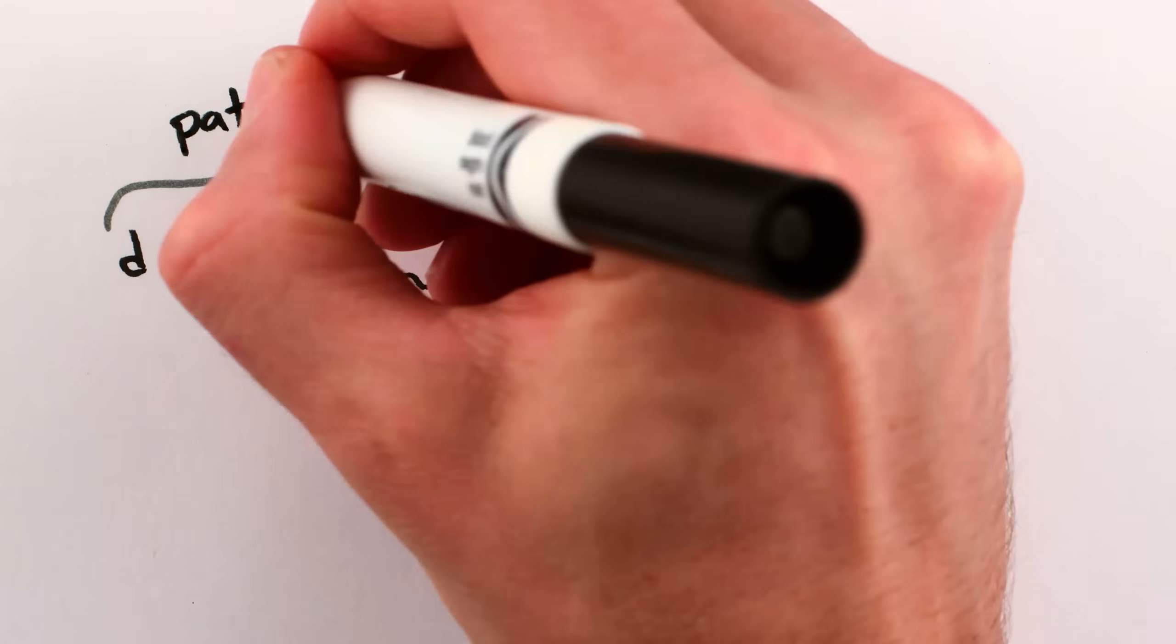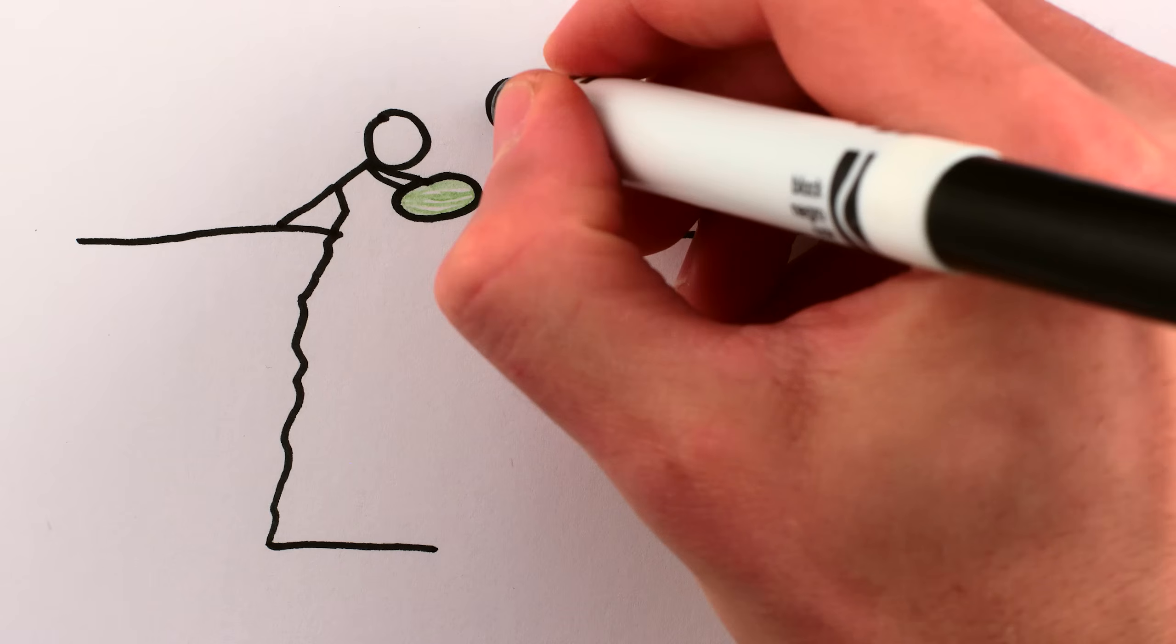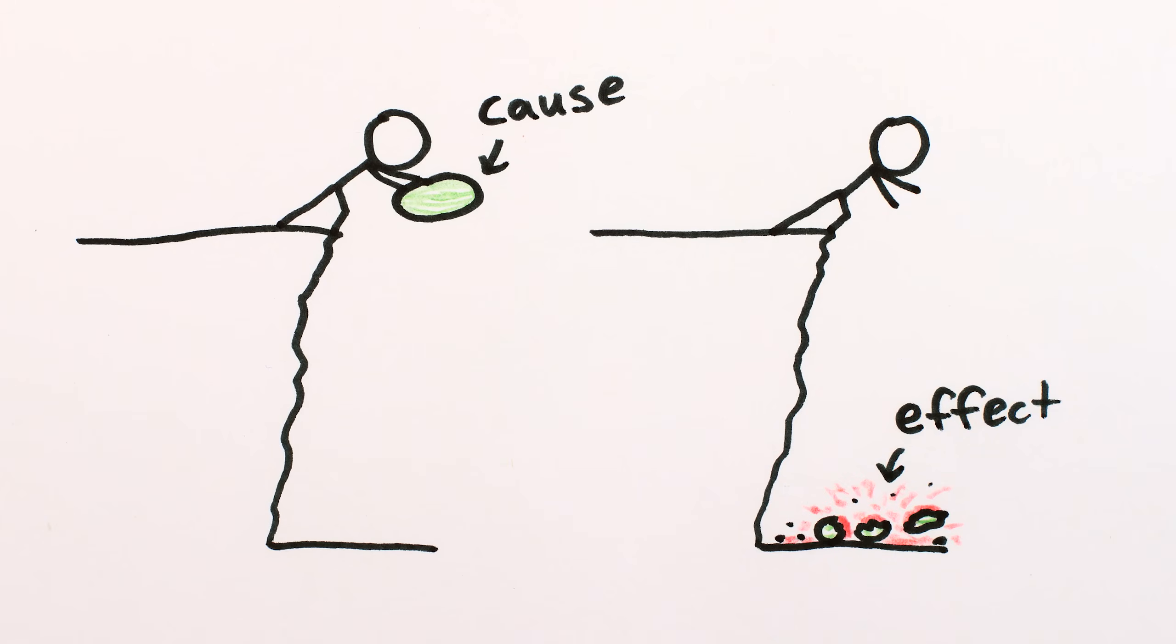At a fundamental microscopic level, all we can say is that there are patterns between events. The macroscopic human-scale concepts of cause and effect only emerge when you have larger collections of particles like humans.